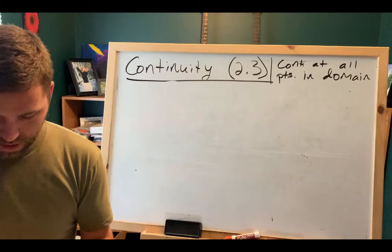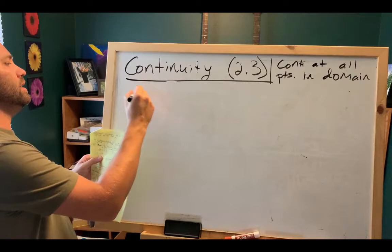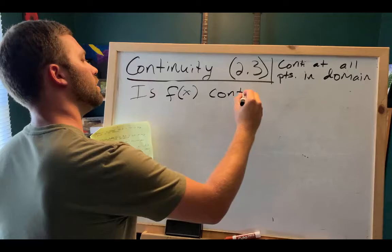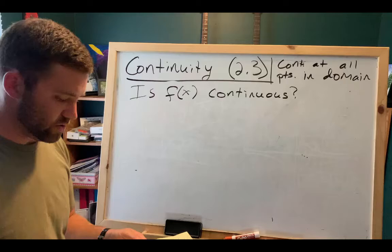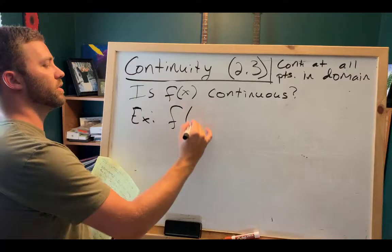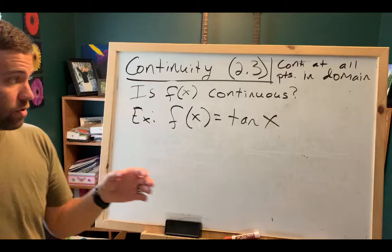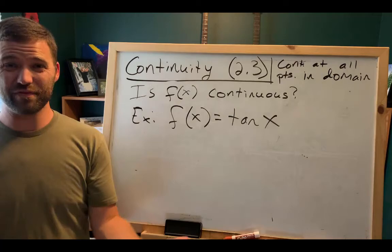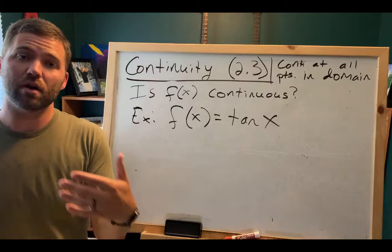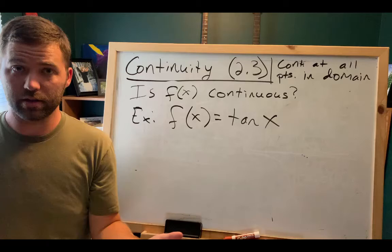Let's look at some examples. Is f of x continuous? Why or why not? Let's start with tangent: f of x equals tangent of x. If you graph tangent, you'll see there are a bunch of asymptotes, and your intuition might be that it's a discontinuous function because of all those asymptotes — it has an infinite number of discontinuities. But based on our definition, at all those asymptotes, are those values in the domain? They're not. So tangent is continuous at every point in its domain and therefore it's continuous.